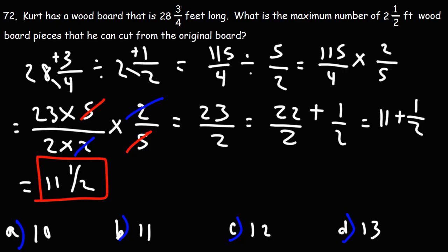If we cut wood pieces of this long, we're going to get 11 wood pieces that are 2 and 1 half feet long. So the remainder is going to be half of this. It's going to be 1 and 1 fourth long. So we can't get 12 wood board pieces with this length. The most that we can get is 11.